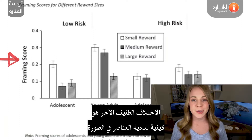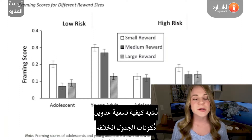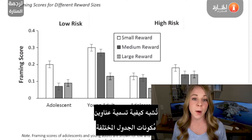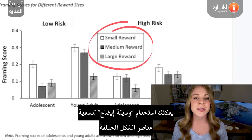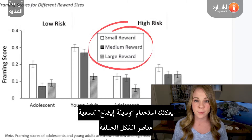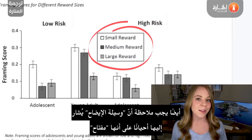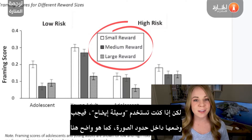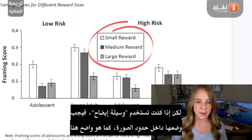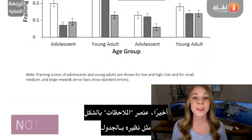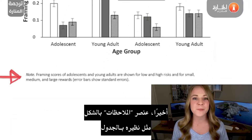The other minor difference is how the elements in the image are labeled. Similar to how headings label the different components in a table, you would use a legend to label the different elements in a figure. A legend is sometimes referred to as a key. If you're using a legend, it should be placed within the border of your image, as you see it here. The notes element is the exact same for a figure as it would be for a table.